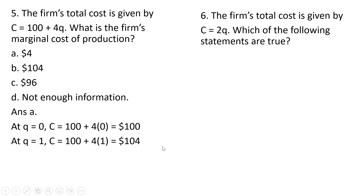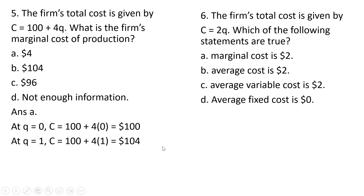Question 6. The firm's total cost is given by C equals 2Q. Which of the following statements are true? Marginal cost is $2 — that is true; every time we produce one more unit of output, total cost goes up by $2. Average cost is $2 — that is correct; average cost is 2Q divided by Q, which is just 2. Average variable cost is $2 — that's correct; total variable cost in this equation is 2Q, there are no fixed costs, so fixed costs are zero. Dividing total variable cost by Q gives average variable cost of $2. So all these answers are correct.